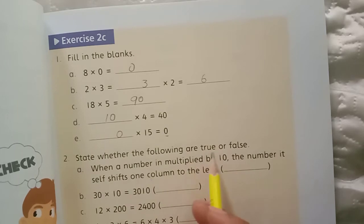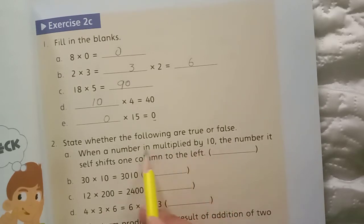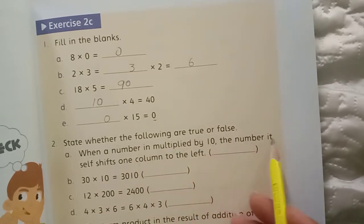Question number 2 is: state whether the following are true or false. Tell us if these statements are true or false. When a number is multiplied by 10, the number itself shifts one column to the left.